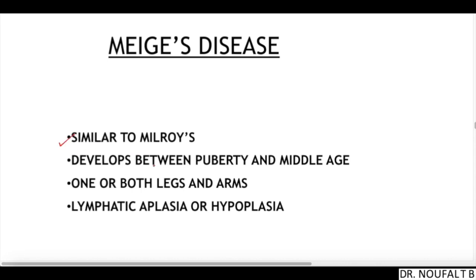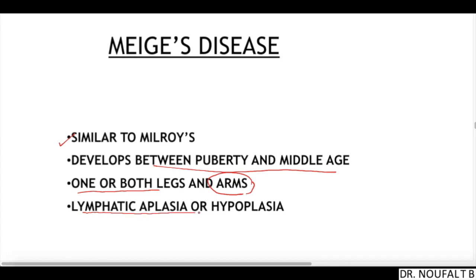In Meige disease, it is similar to Milroy disease but develops between puberty and middle age. One or both legs may be affected and the arms may also be involved. There is also associated lymphatic aplasia or hypoplasia.